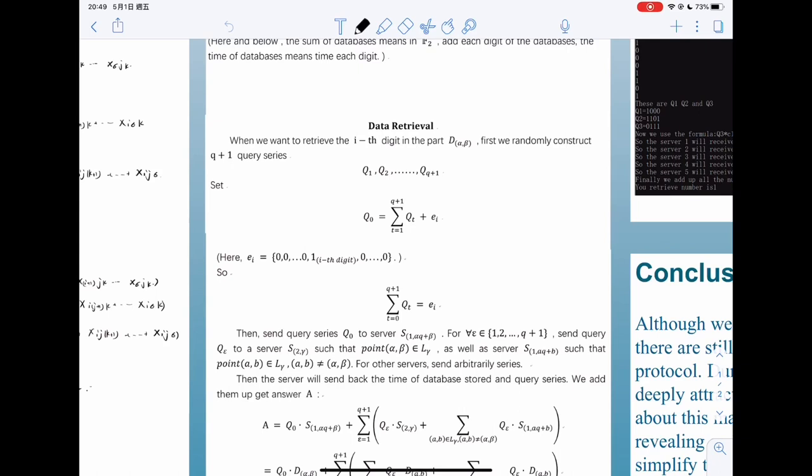And then we set q0 is the sum plus e_i. And e_i is constructed like this.